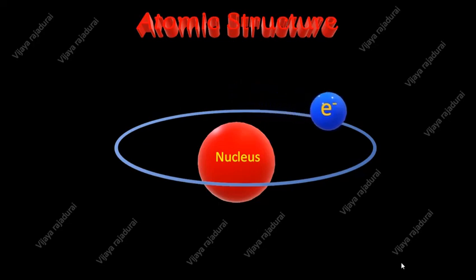Nucleus is made up of protons and neutrons. Proton is the positively charged particle, and neutron is the chargeless particle.